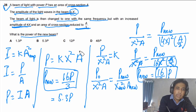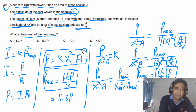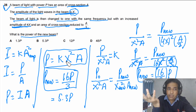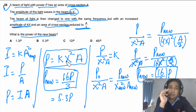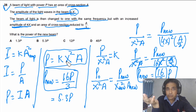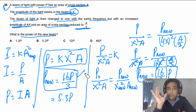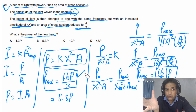In summary: if amplitude increases four times, power increases by 16; if area decreases by three times, power decreases by three. So the answer is 16P/3. I hope this makes sense. If you have any questions, please leave them in the comments.